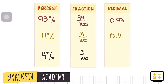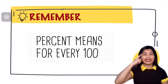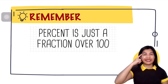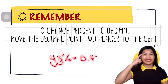For 4 percent, we move the decimal two places to the left — once, then twice — so we include a zero: 0.04, or 4 hundredths. Remember: percent means for every 100. Percent is just a fraction over 100. And to change percent to decimal, move the decimal point two places to the left. So for 43 percent, we write 43 over 100 as a fraction, and move two places to the left for the decimal: 0.43, or 43 hundredths.